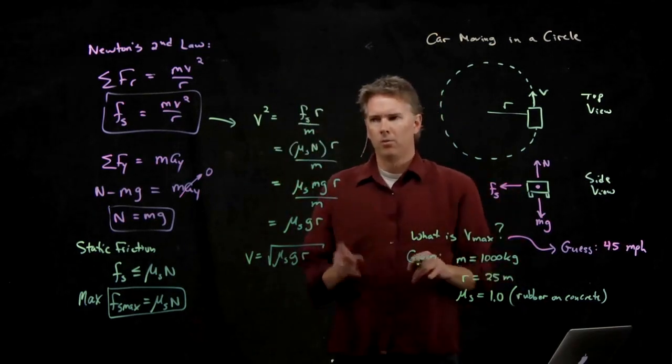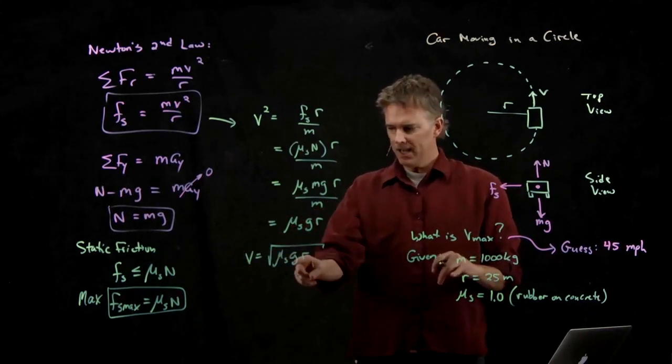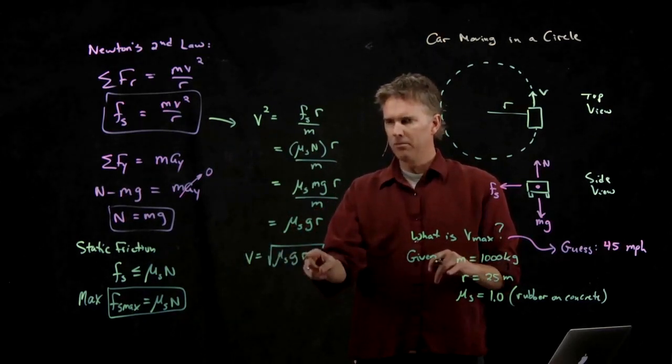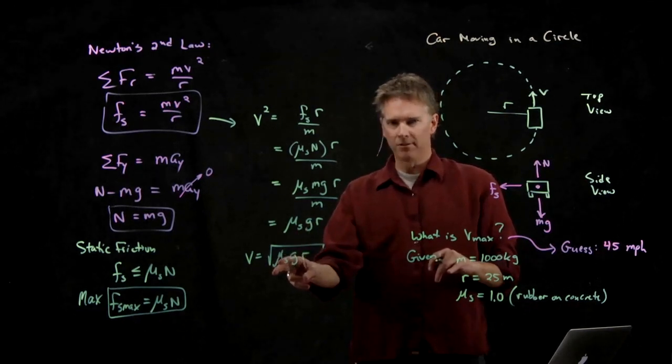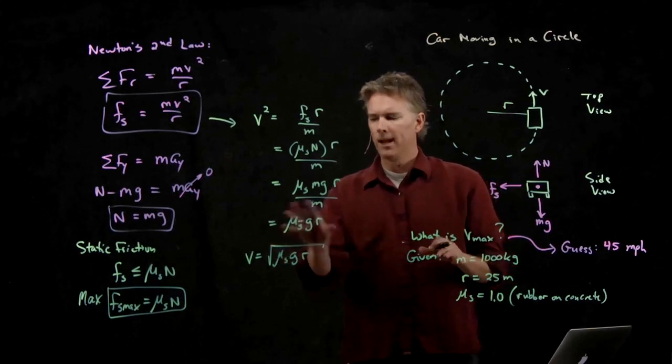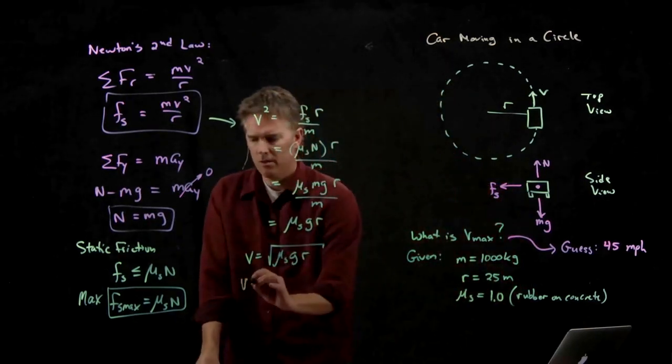Let's make sure that this works out in terms of units. V we know is meters per second. G is meters per second squared. R is meters. So I get meters squared per second squared. Mu s is, of course, unitless. When I take the square root of that, I get meters per second. We like that.